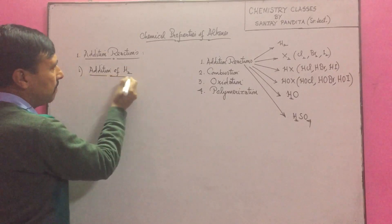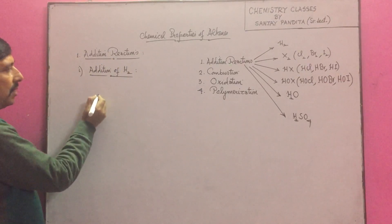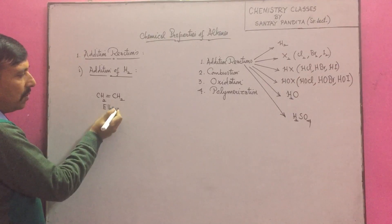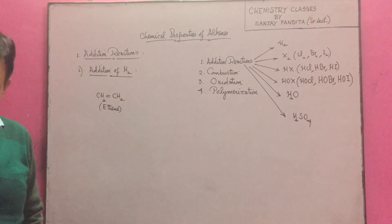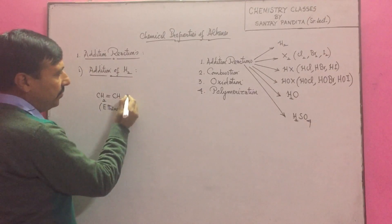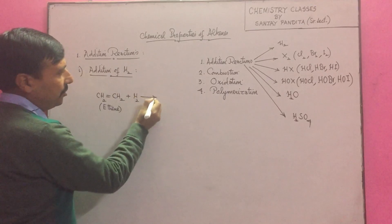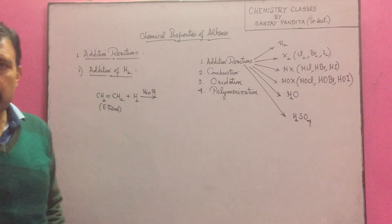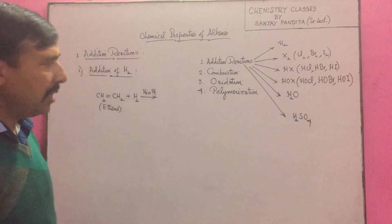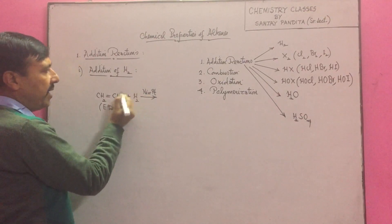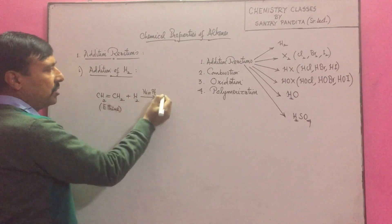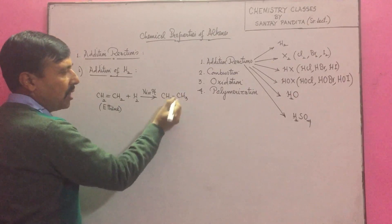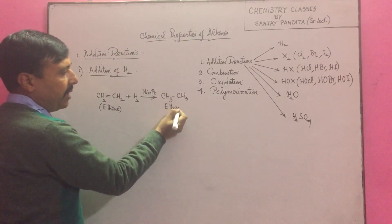Addition of hydrogen — very simple. Let us take the example of ethene. The common name of ethene is ethylene. We add hydrogen. Whenever hydrogenation is done, it is done in the presence of nickel, platinum, or palladium. One H goes to each carbon across the double bond, and we get a saturated two-carbon hydrocarbon.